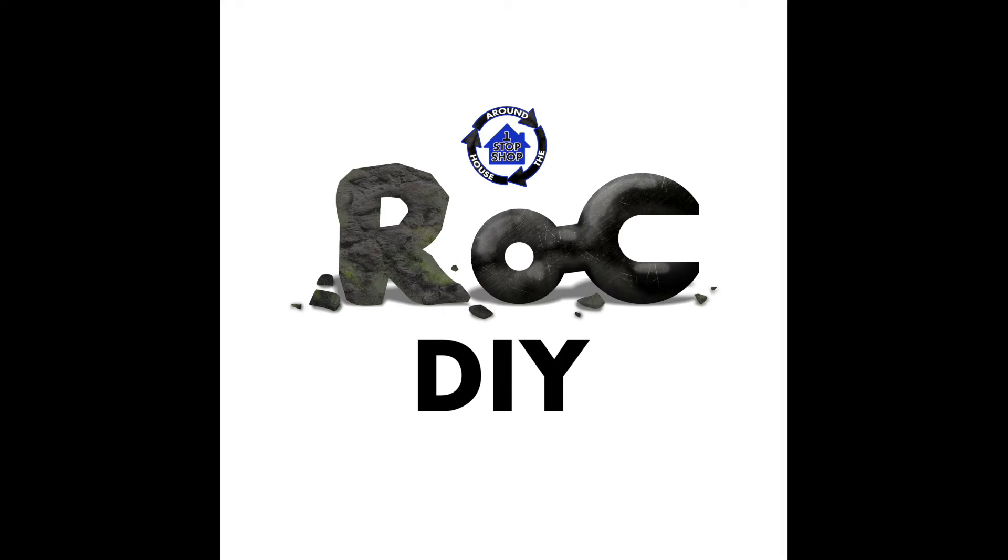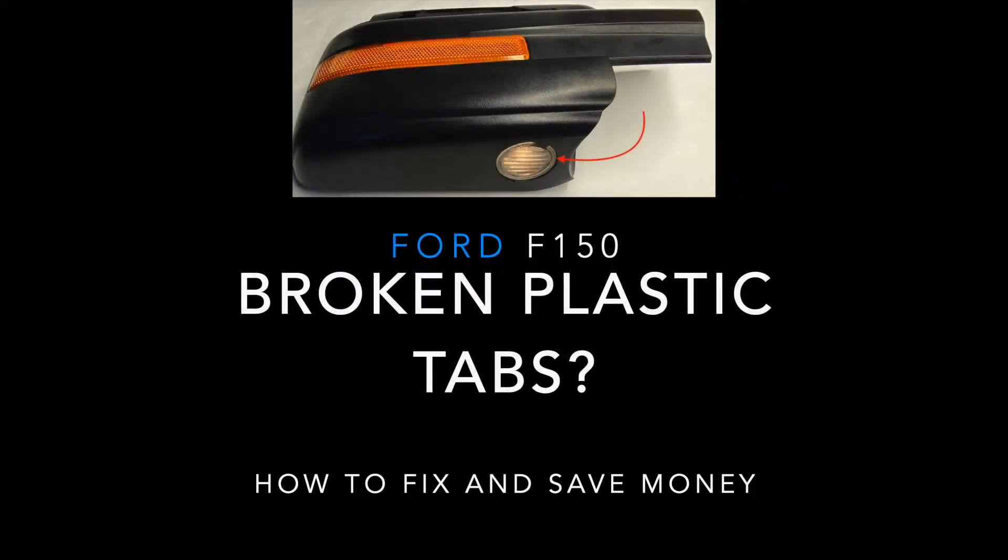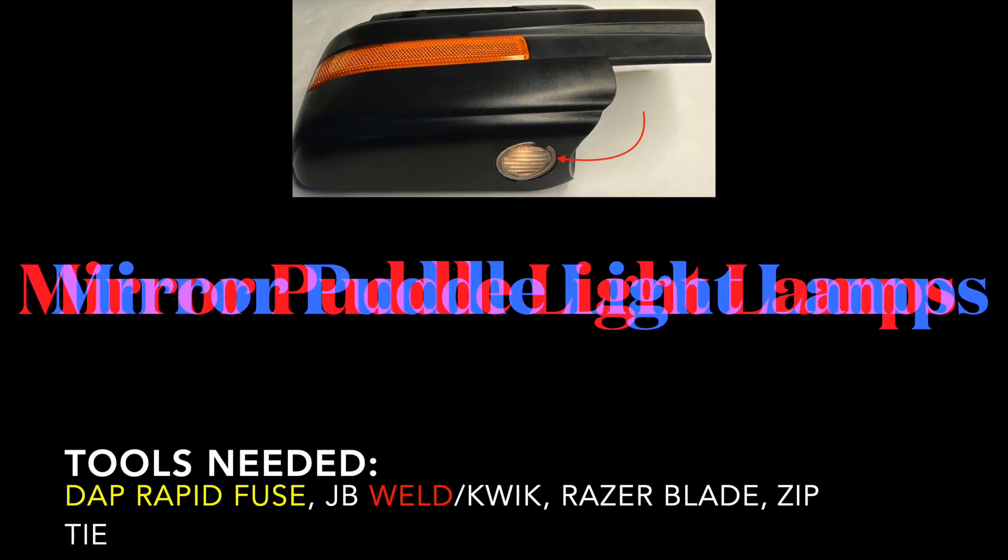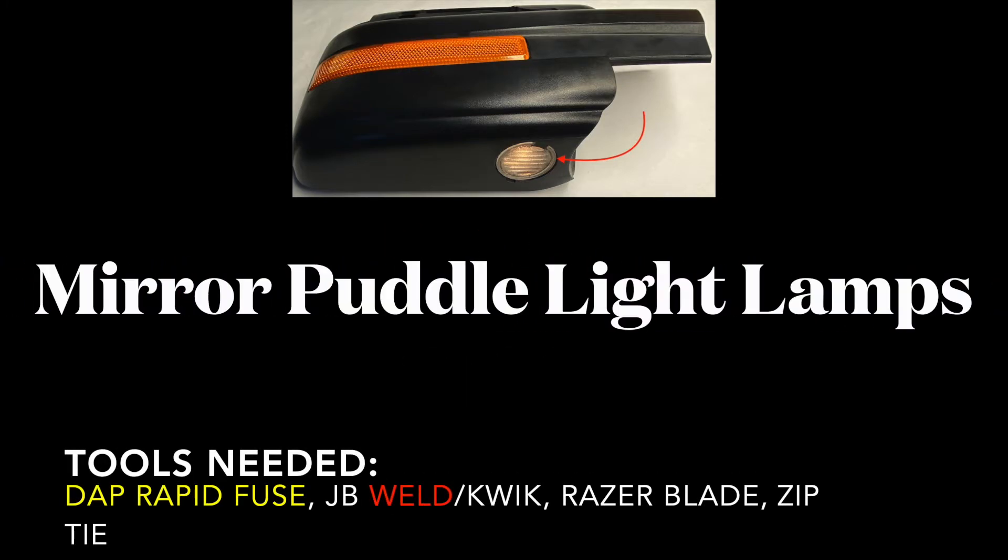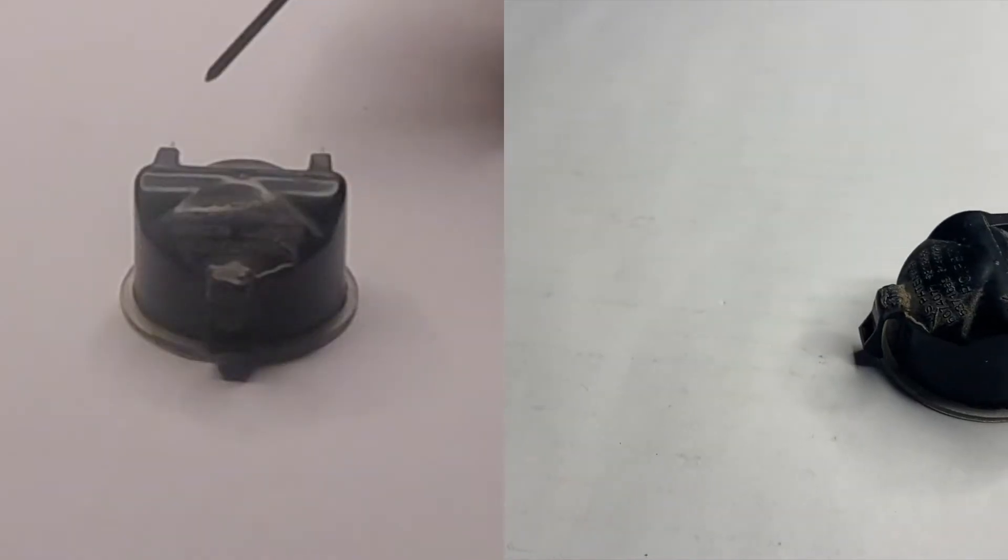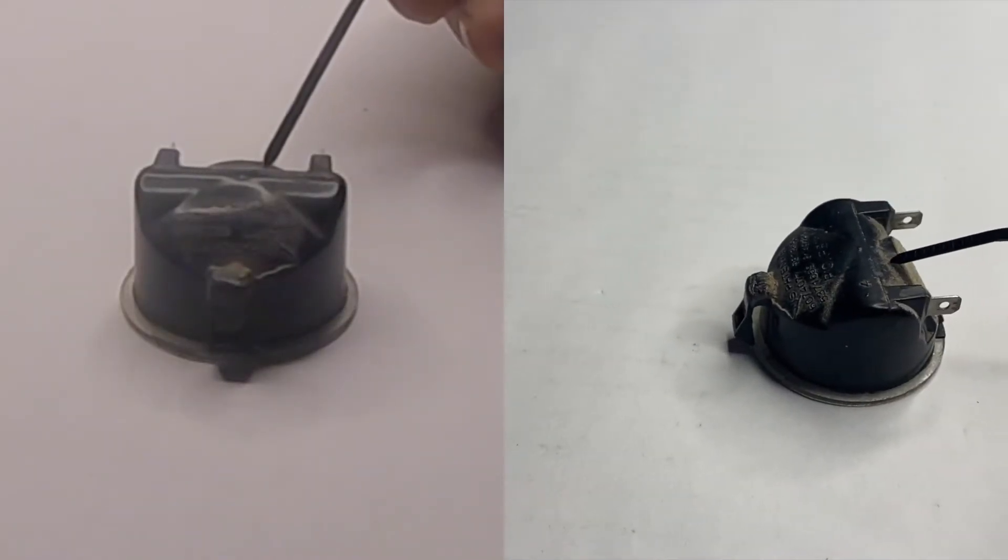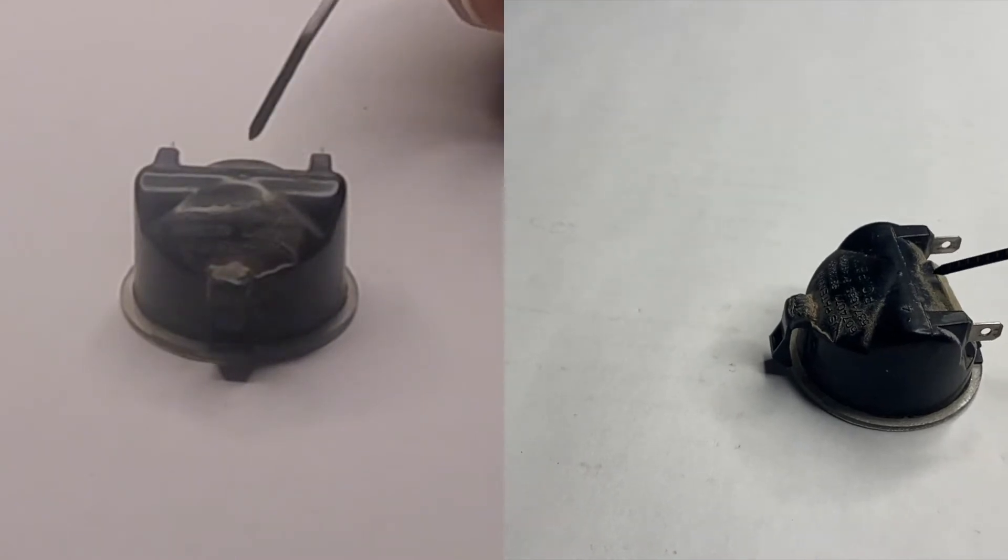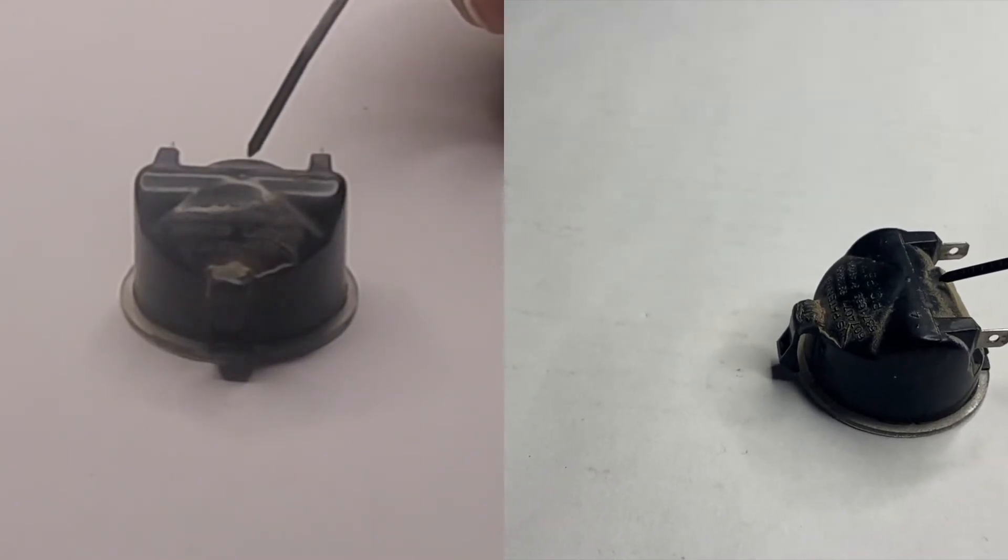Rock DIY, or do it you. This is a puddle lamp. It goes on the side mirrors of a 2010 Ford F-150 Platinum.